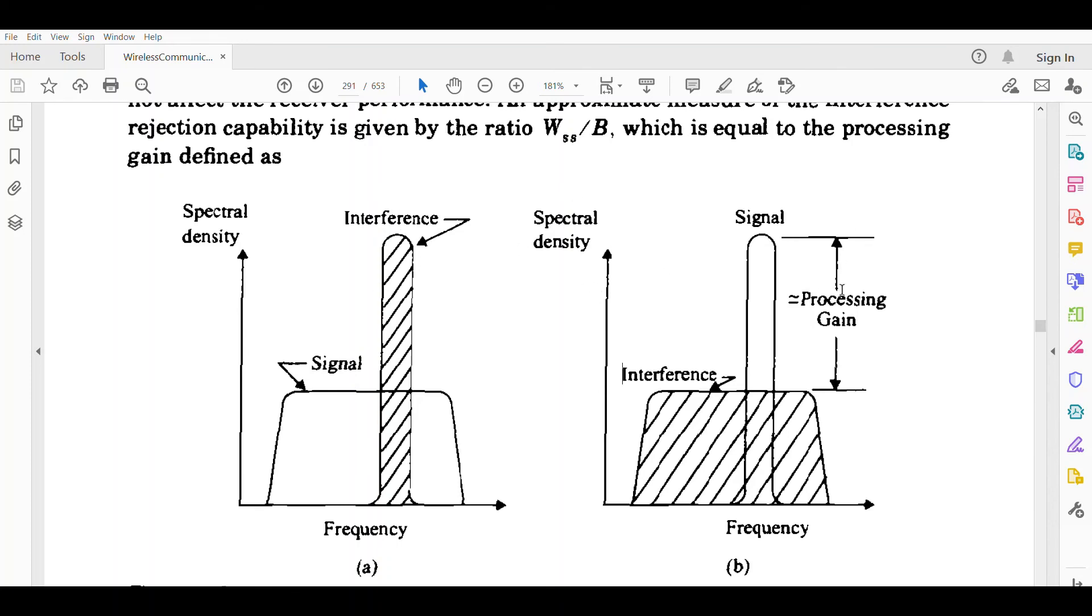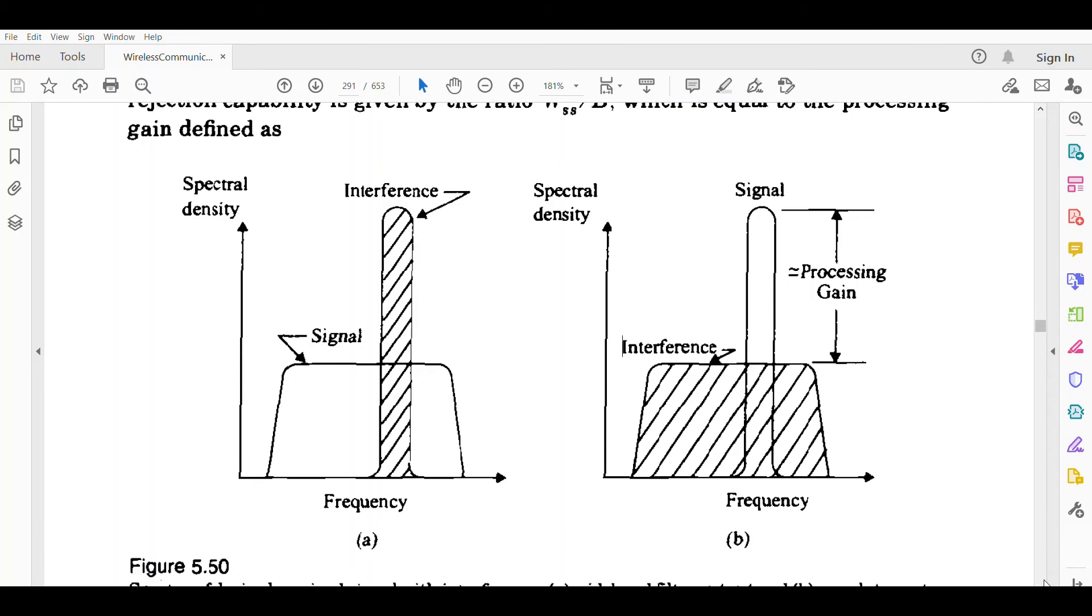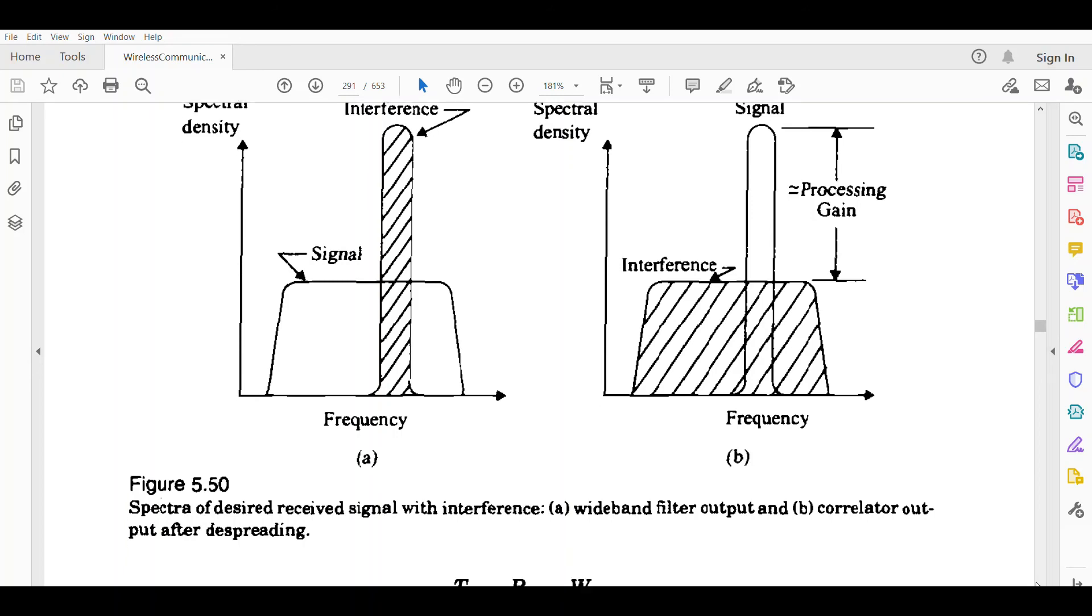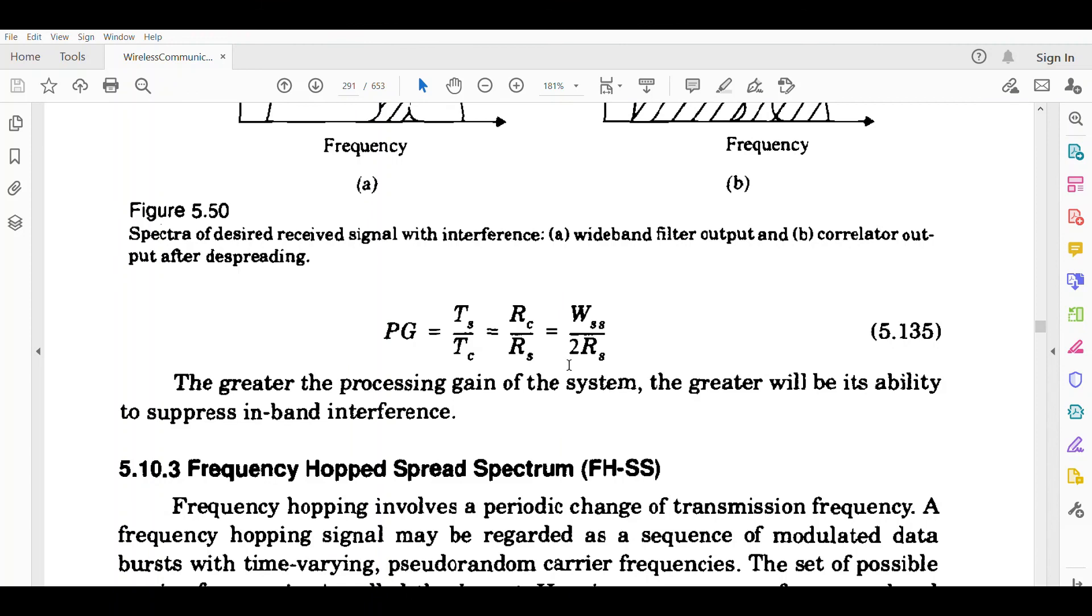You can see this explanation here. This is spectral density versus frequency. This is my signal, and on top of the signal is the interference. Here you can see this is the processing gain. The interference is mixed with frequency and spread out. The upper spectral density is the wideband filter output (a), and this is the correlator output after despreading (b). The signal is obtained here.